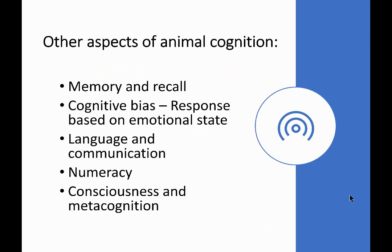There are many interesting areas of animal cognition we can study. Studies on memory and recall show how it varies between species based on evolutionary history. We can study cognitive bias — how an organism's response changes based on emotional state. We can study communication and rudimentary language within species, organisms' numeracy abilities including counting and calculation, and intelligence in terms of consciousness and metacognition.